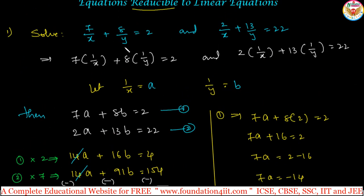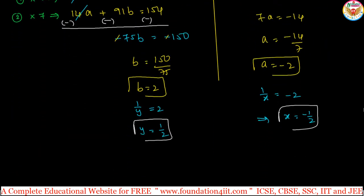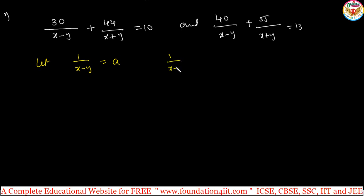Instead of finding directly here, whenever the denominators have the variables you can use this method. See one more example. The second one, let me take one example: 30 divided by x minus y plus 44 divided by x plus y equals 10, and 40 by x minus y plus 55 by x plus y equals 13. Here x minus y and x plus y are denominators. Let us take 1 by x minus y equals a, and 1 by x plus y equals b.